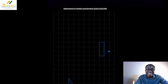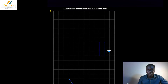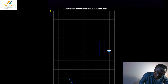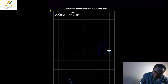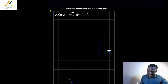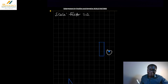When you're asked to enlarge, in higher GCSE and sometimes foundation, they'll give you a center of enlargement — often marked as a dot, like the one we have here. We want to enlarge this rectangle by a scale factor of two. That means we're going to make this rectangle twice as big, with the center as our reference point.